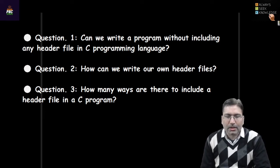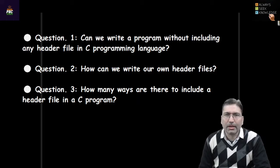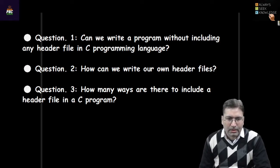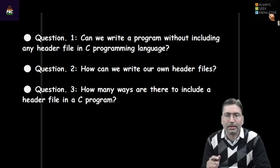So the answer to the first question is yes, we can write C programs without header files. The next question is: can we write our own header files? Yes, we can write our own header files — they are not very different things. If I talk about a C header file, it is also written in C. The third question: how many ways are there to include a header file in a C program? We generally use #include with angular brackets — is there any other way?